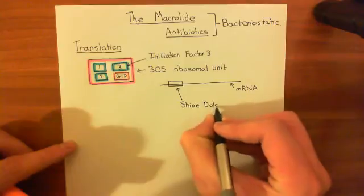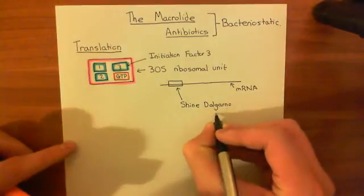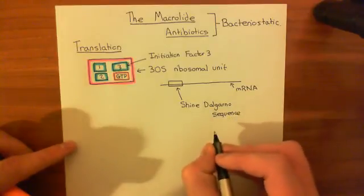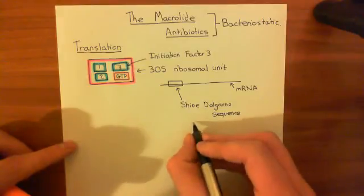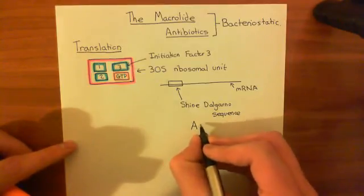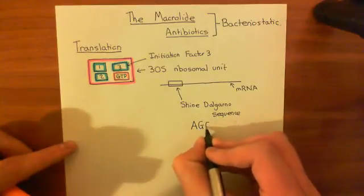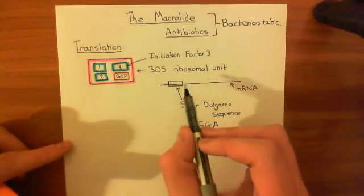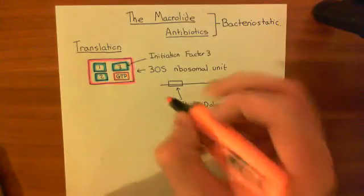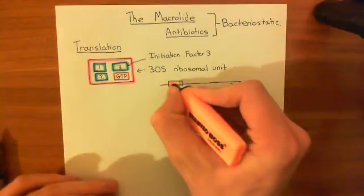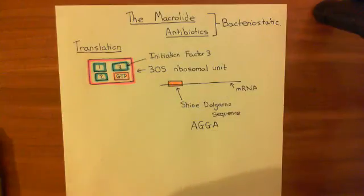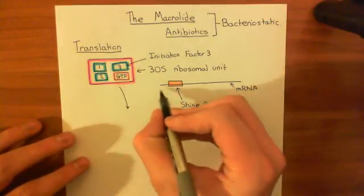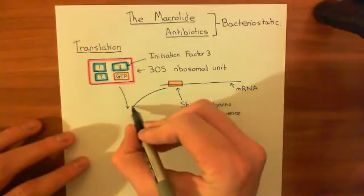This box drawn here represents the Shine-Dalgarno sequence. The Shine-Dalgarno sequence is not just one sequence — there are multiple Shine-Dalgarno sequences. However, generally they contain the organic base code AGGA or AGA. So you usually find AGA somewhere within the Shine-Dalgarno sequence. I'll colour it in orange — this is what's going to come and bind to our 30S ribosomal subunit.